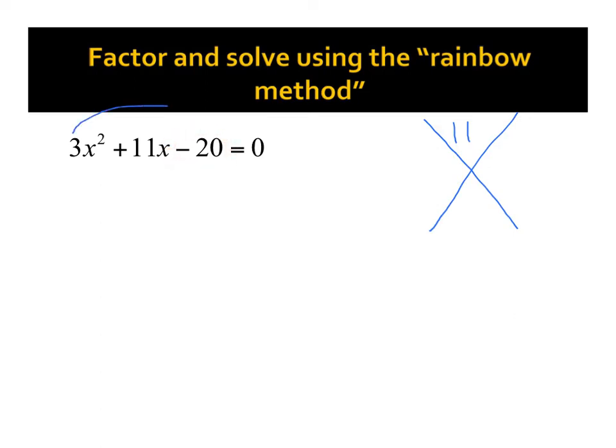we want to multiply to the product of these two, which would be negative 60. So what are two numbers that multiply to negative 60 and add up to 11?